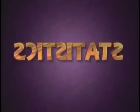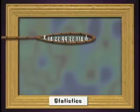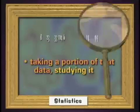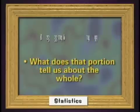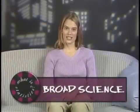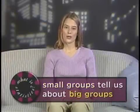There are a couple of ways to look at the word statistics. First, let's think of statistics in the big picture. Say you've got a bunch of numbers, or what we call numerical data - statistics is the science of taking out a portion of that numerical data, studying it, and figuring out what that portion tells us about the data as a whole. This leads us to our second way of looking at statistics, the little picture: the broad science of statistics involves using smaller groups of numbers to tell us stuff about bigger groups of numbers.